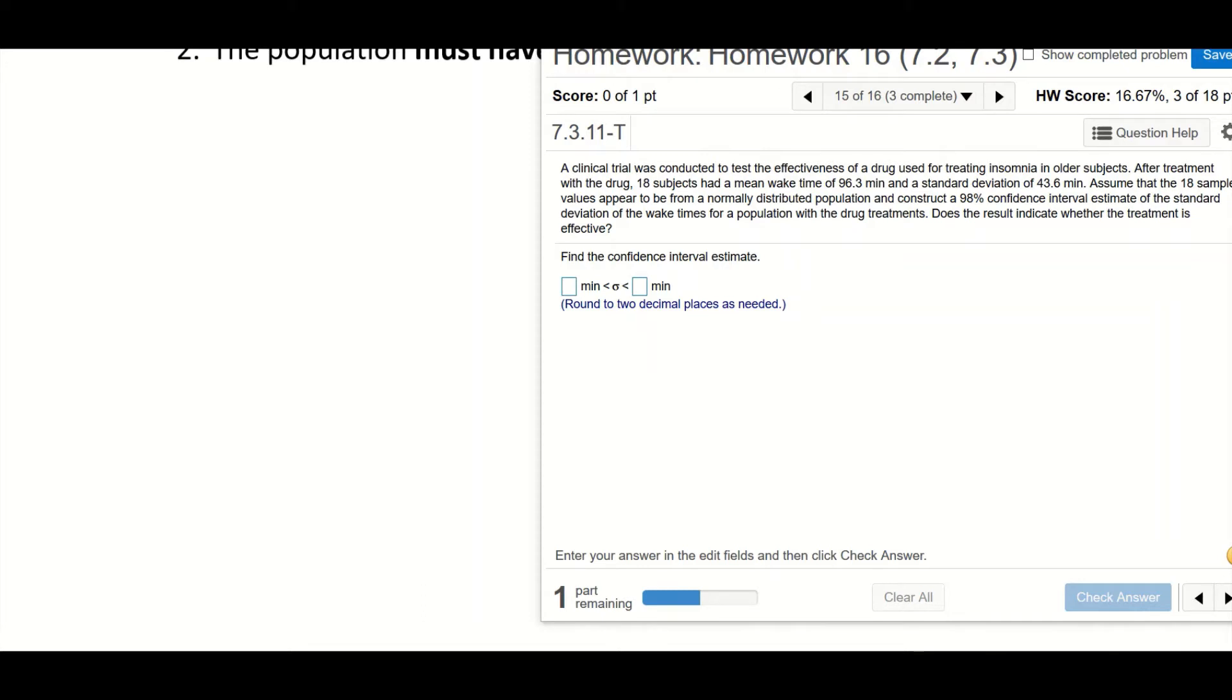A clinical trial was conducted to test the effectiveness of a drug used for treating insomnia in older subjects. After treatment with the drug, 18 subjects had a mean wake time of 96.3 minutes and a standard deviation of 43.6. Assume that the 18 sample values appear to be from a normally distributed population and construct a 98% confidence interval estimate of the standard deviation of the wake time for population with drug treatments.